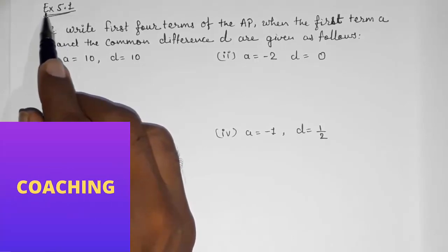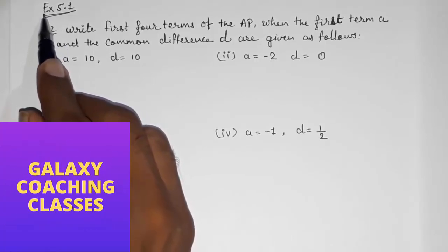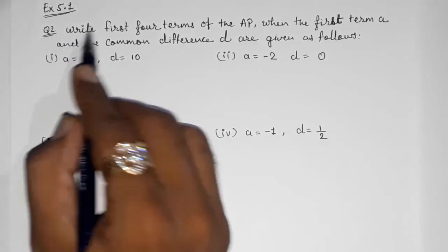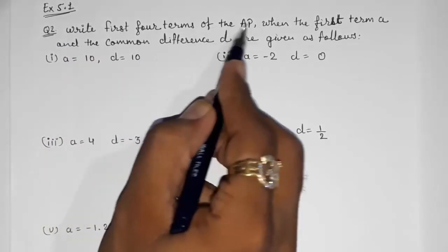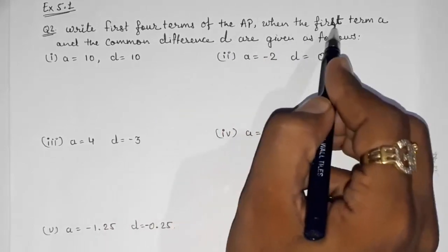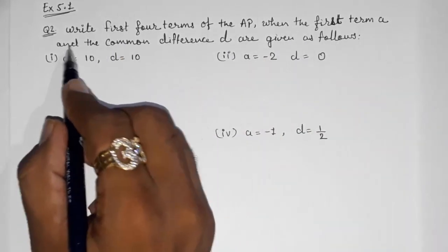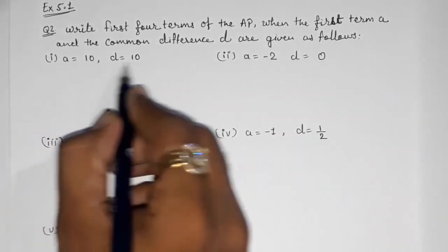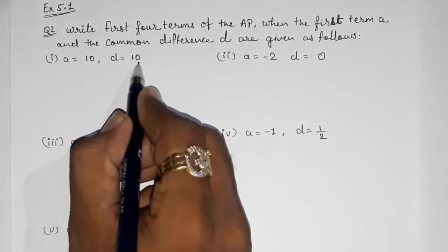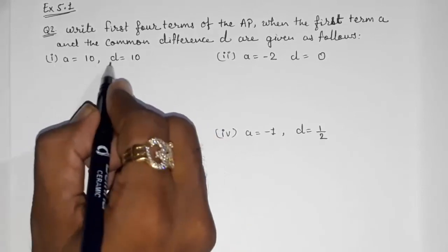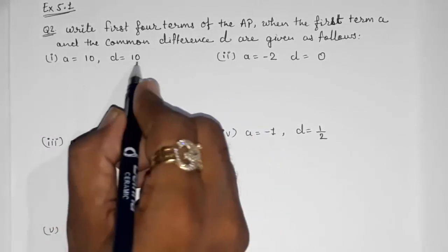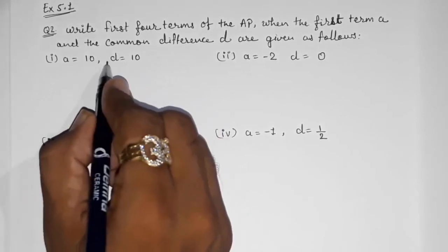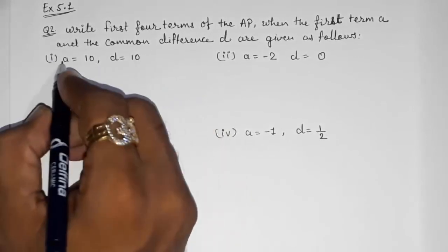Hello friends, today we are going to solve CBSE Class 10th Maths Exercise 5.1, Question Number 2: write the first four terms of the AP when the first term a and the common difference d are given. We can find the AP by simply adding, or by putting a and d into the formula.